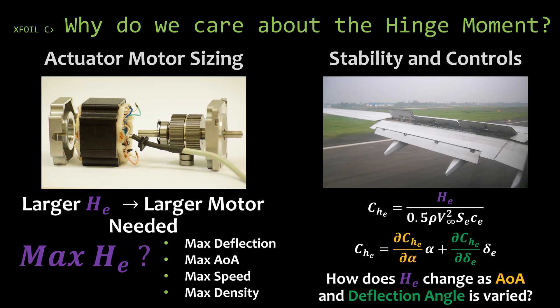The other reason we care about hinge moment would be for stability and control. We're trying to characterize how the plane responds based on its aero loading around the control surface. Here's an equation for the coefficient of hinge moment, with the hinge moment in the numerator. In the denominator, we have rho which is the density, v infinity which is the speed of the free stream flow of air, S which is the planform area of the control surface, and c which is the chord of the surface.